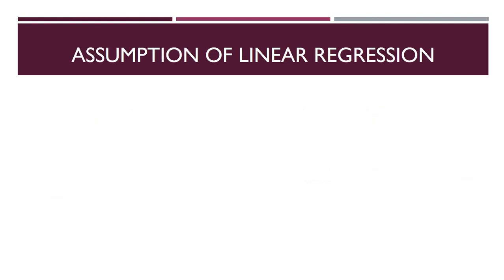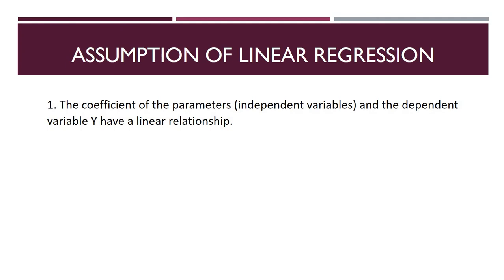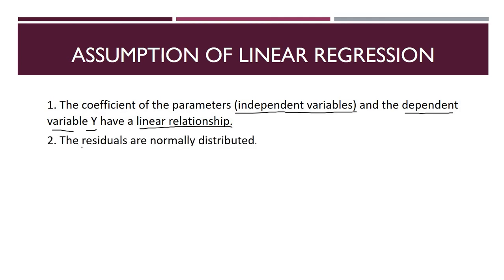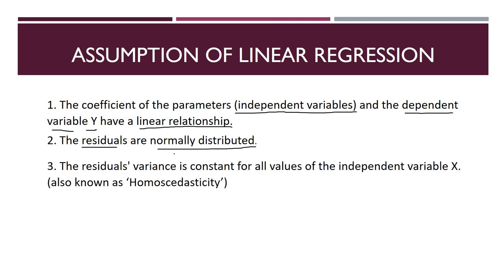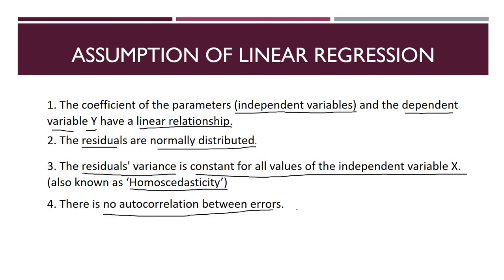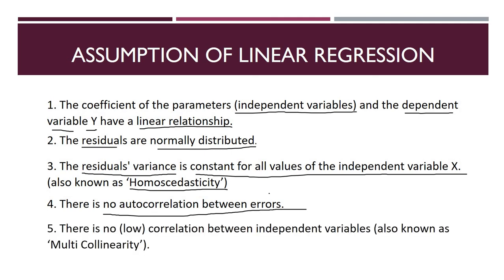Here are the five assumptions. First: the coefficients of the parameters — whatever independent variables and dependent variable y we are taking — have a linear relationship. Second: the residuals are normally distributed. Third: the residuals' variance is constant for all values of the independent variable x, which we commonly call homoscedasticity. Fourth: there is no autocorrelation between the errors (residuals). Fifth: there is no or low correlation between the independent variables, also known as multicollinearity.